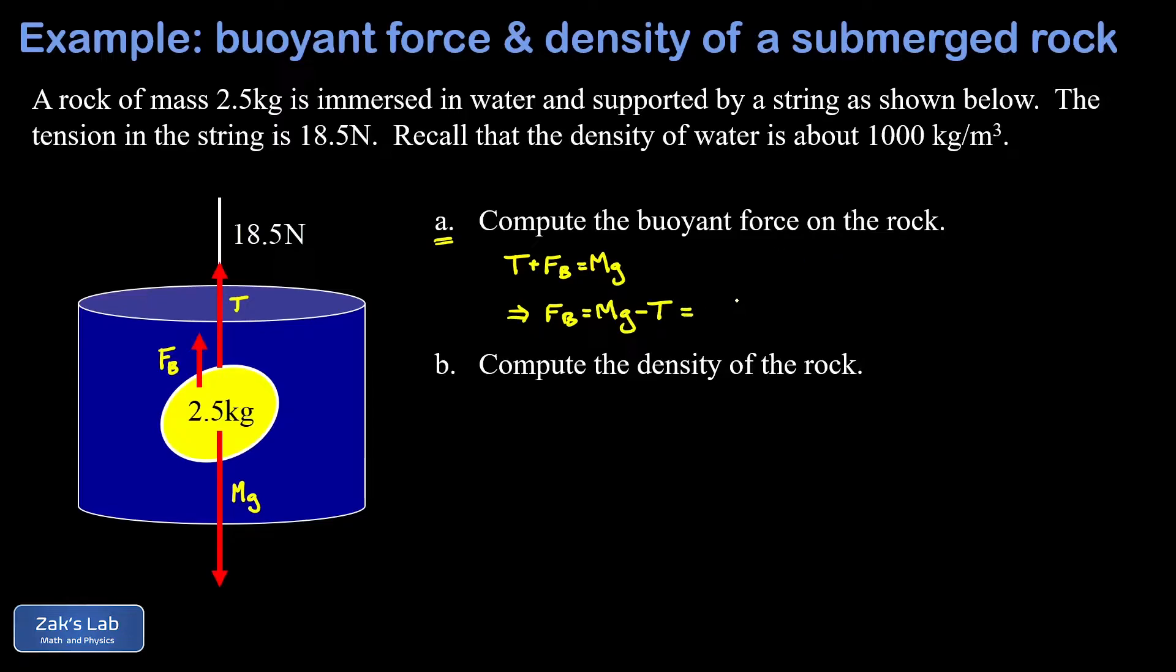Now we just have to plug numbers in. The mass of the rock is 2.5 kilograms, the approximate value of g is 9.8 meters per second squared, and the given tension in the string is 18.5 newtons. When we run the numbers on this, we get exactly 6 newtons for the size of the buoyant force.